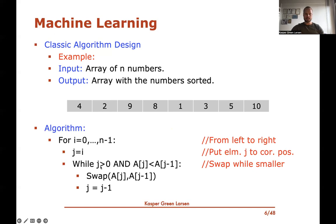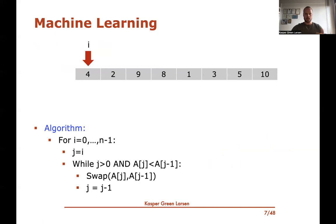You set J to I, and you keep going backwards. While the number you have is smaller than the previous one, you swap them and go back. So let's see an example: let's say I want to sort this array. I start at the very first entry — there are no elements before it, so I don't do anything. So I set J to I, and J is not greater than zero, so I don't do anything. Then I move on to the next iteration of the loop.